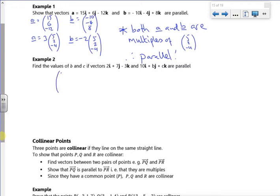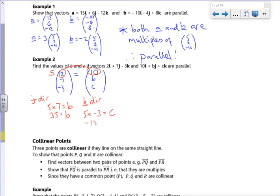I've got the vector 2, 7, minus 3. I want to multiply it by something to give me 10. So what do I have to multiply the 2 by to make it into 10? Well, that's obvious, that's just 5. So hopefully, I should be able just to multiply the b and c values to get it right. So if I look in the j direction, I've got 5 times 7 is 35 for b. If I look in the k direction, I've got 5 times minus 3, so that's minus 15 for c.